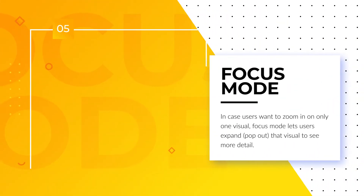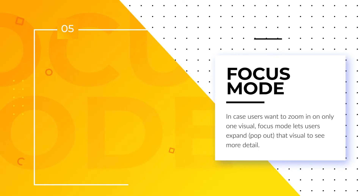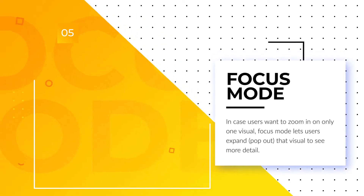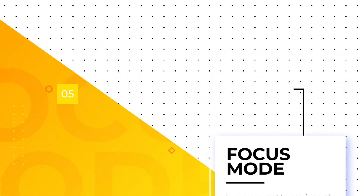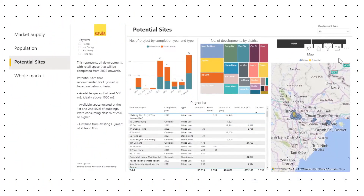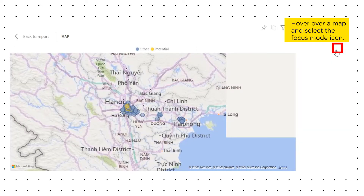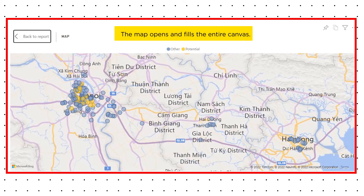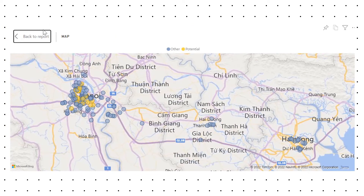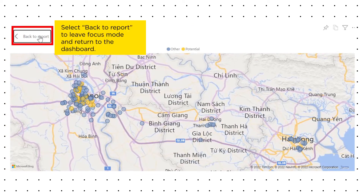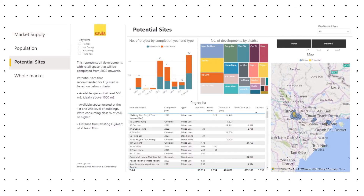Focus Mode. Hover over a map and select the Focus Mode icon. The map opens and fills the entire canvas. Select Back to Report to leave Focus Mode and return to the dashboard.